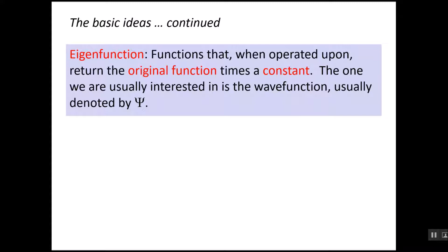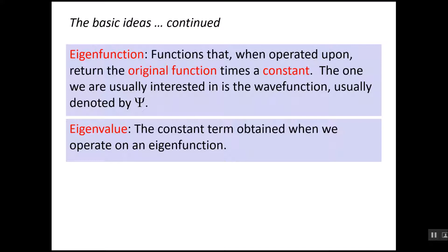Another idea is that there are functions that if we operate on them, we get the original function back times a constant. And those are called eigenfunctions. The ones that we're usually interested in are the wave function, denoted by the symbol psi. If we operate on a function and get the function back times a constant, the constant is called the eigenvalue. That's the constant term we obtain when we operate on an eigenfunction.